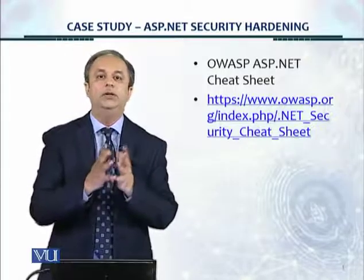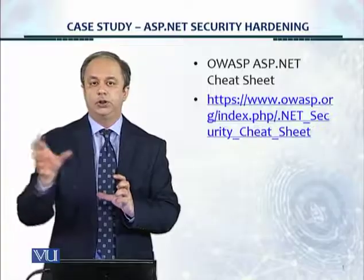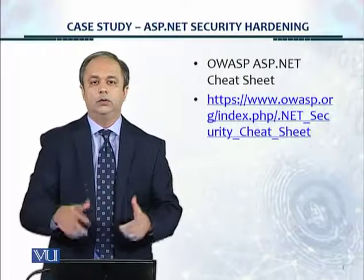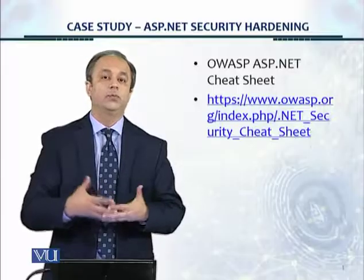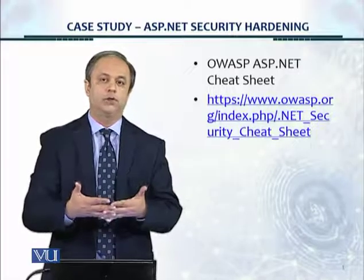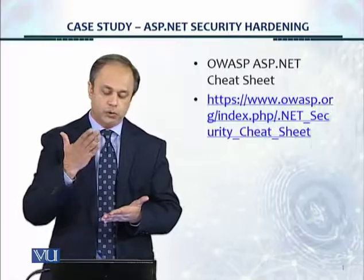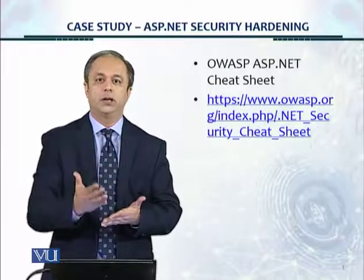The control set can change based on that research. For every different situation or time period — for example, two years from now this cheat sheet may be old. Whenever you are going to secure an IT asset, you always need to follow the eight steps. Step number one: research the controls. Based on the situation at hand, you may come up with a different set of controls, and that's the job of the information security professional.